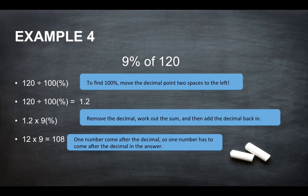One number come after the decimal point in the question, so one number has to come after the decimal point in the answer. So 108 would be 10.8. So 9% of 120 is 10.8.